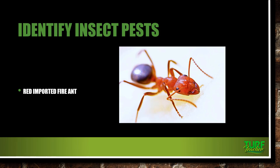Mating flights occur in the spring and fall in the afternoon, soon right after a rainy period. The males die right after mating. The mature queen will lay up to 800 eggs a day. The average colony contains up to a hundred thousand to half a million workers and up to several hundred winged ants and queens.